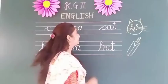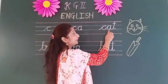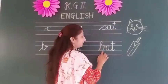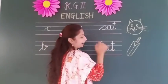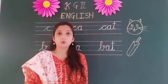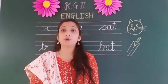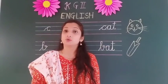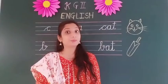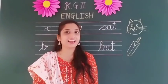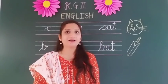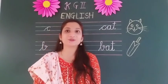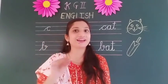Today we learned how to make words. C, A, T — Cat. B, A, T — Bat. Okay kids, we will provide a sheet to practice and sign. So bye bye!